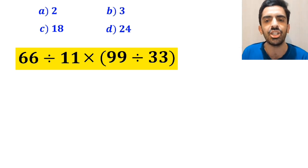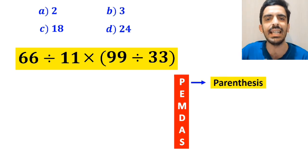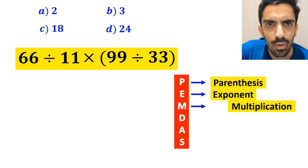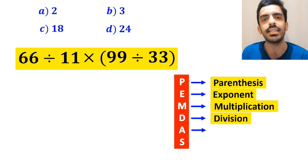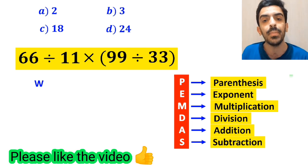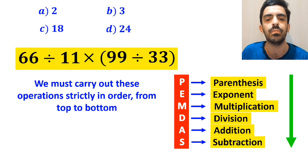To solve this question, we need to follow the PEMDAS rule step by step. P stands for parenthesis, E stands for exponent, M stands for multiplication, D stands for division, A stands for addition, and S stands for subtraction. We must carry out these operations strictly in order from top to bottom.